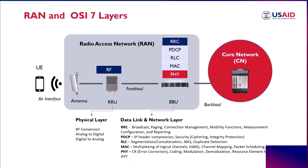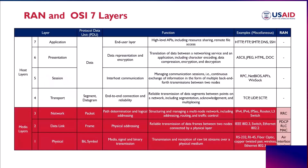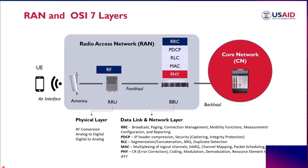This is the best illustration of the RAN and OSI layer mapping. Looking at the table again, the RRC maps to the Network layer, PDCP, RLC, and MAC map to the Data Link layer, and the Physical layer is at the bottom. That is the RAN and OSI layer mapping.